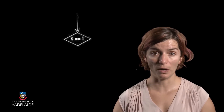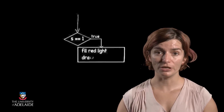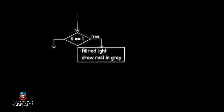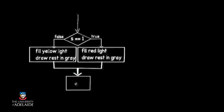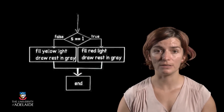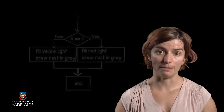Instead, let's draw only the red light as filled and the rest gray if s is equal to 1, and the yellow light as filled and the rest gray otherwise. The flowchart for this would look like this. The code for this flowchart is structured around an if statement, followed by an else statement after the curly bracket, like this.